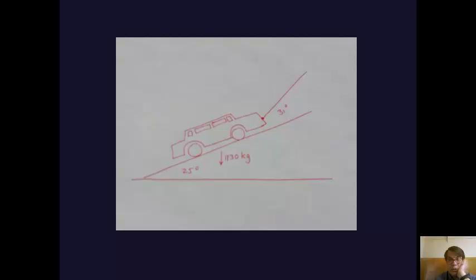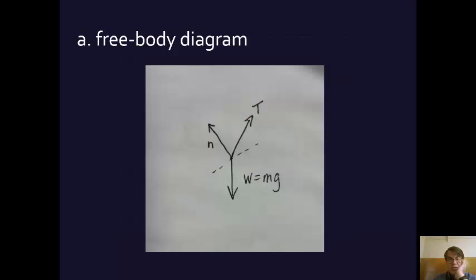Here's my diagram. This is not a free body diagram. This is a diagram of the sort I draw to help me see what's going on. You can see the ramp is 25 degrees over the horizontal, and then the tension of the cable holding the car is 31 degrees above the ramp.